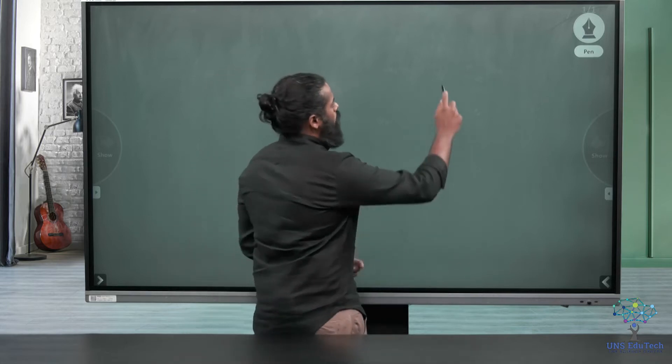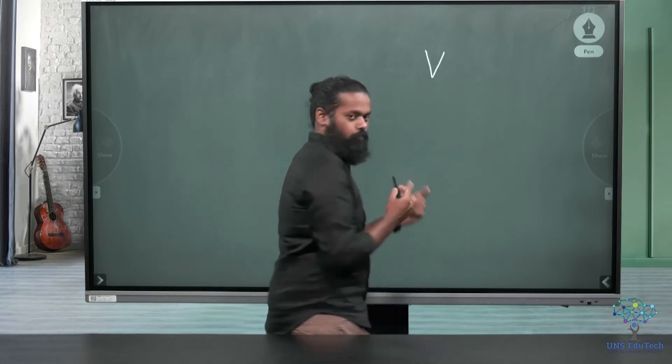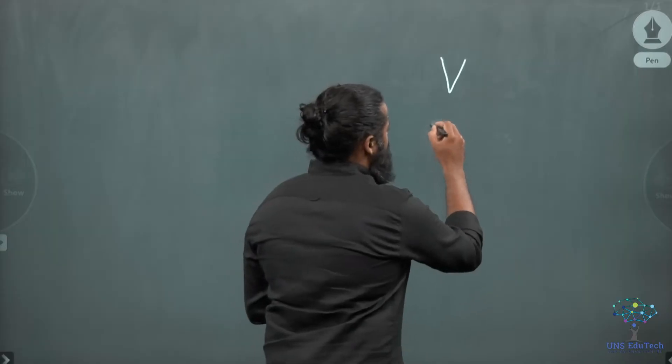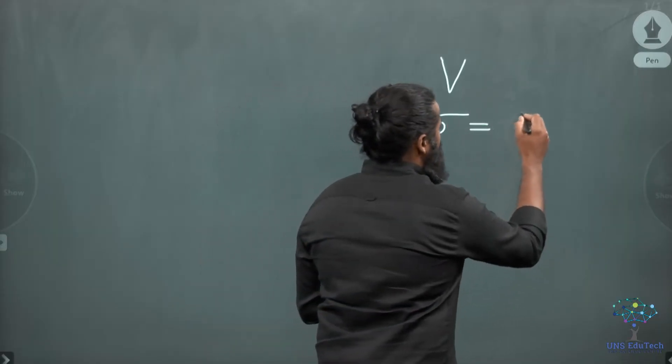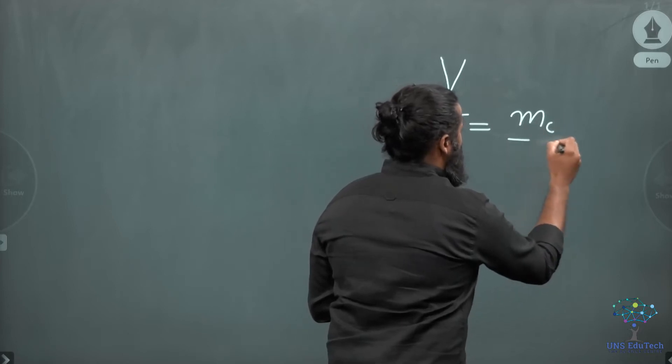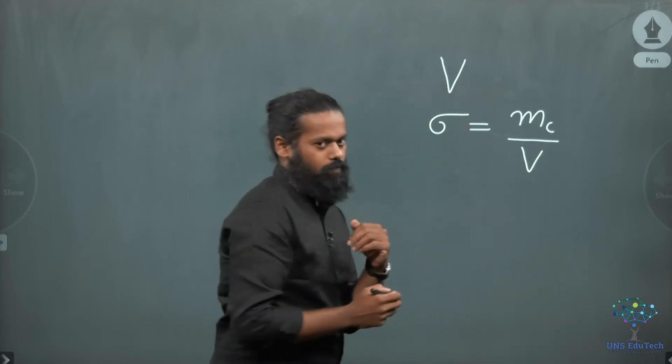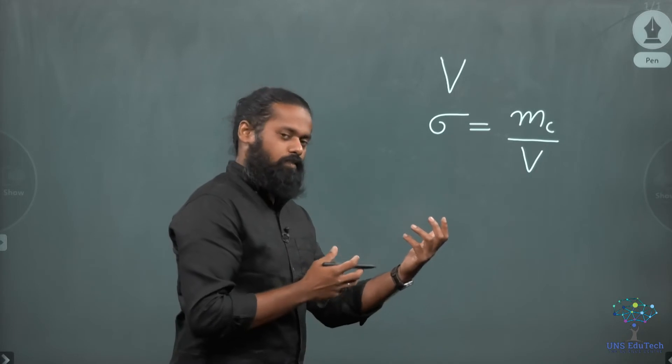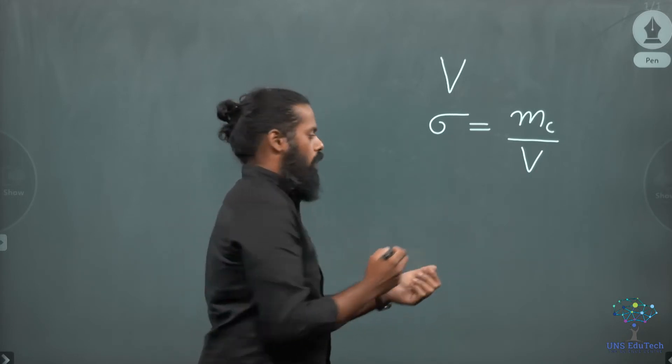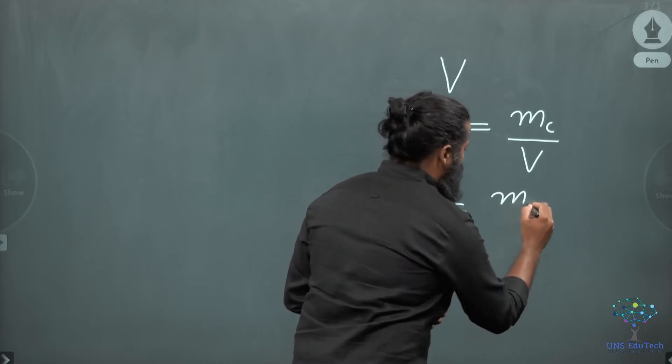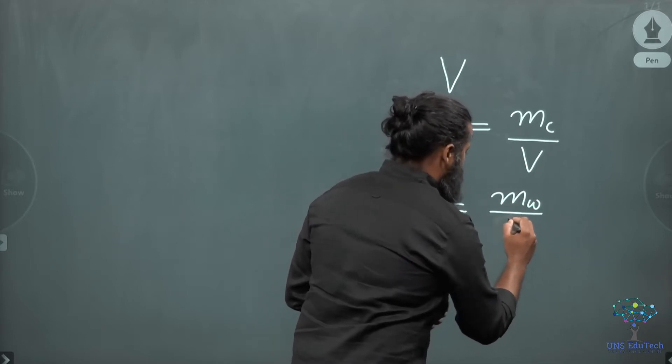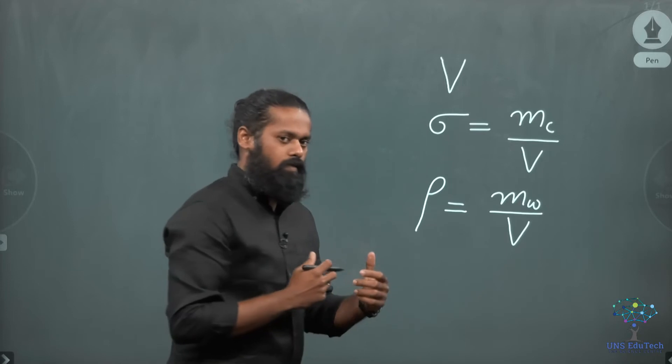Now let us go to the mathematical aspects of Archimedes principle. Assume that the volume of the cork we used is V, and sigma is the density of that cork. Density is nothing but the mass of the cork divided by volume of the cork. Now let rho be the density of the liquid.